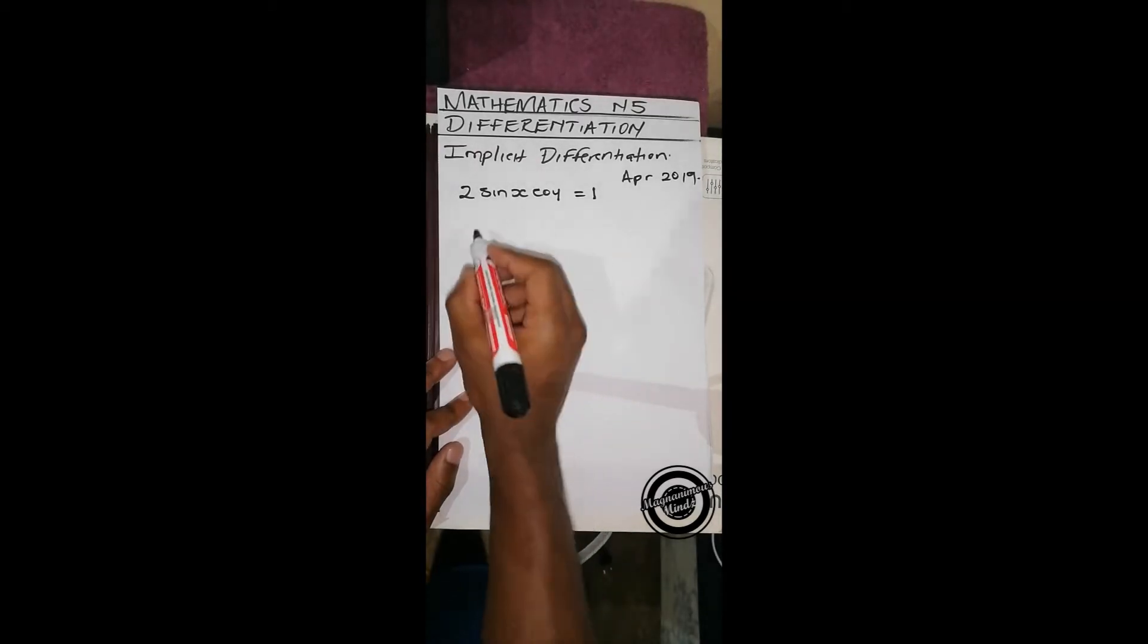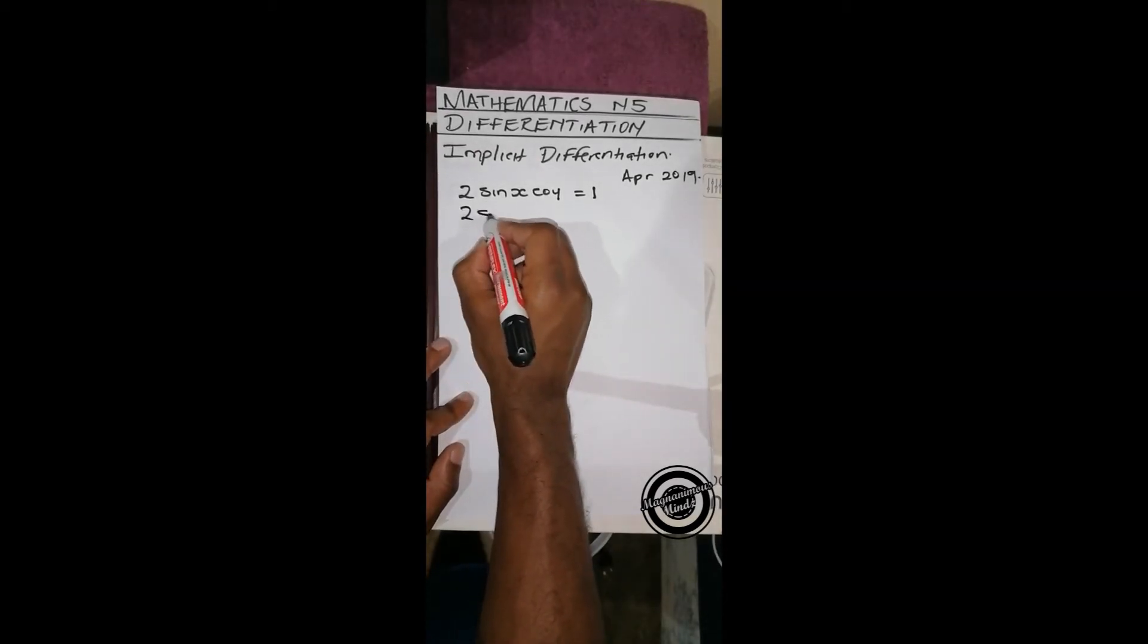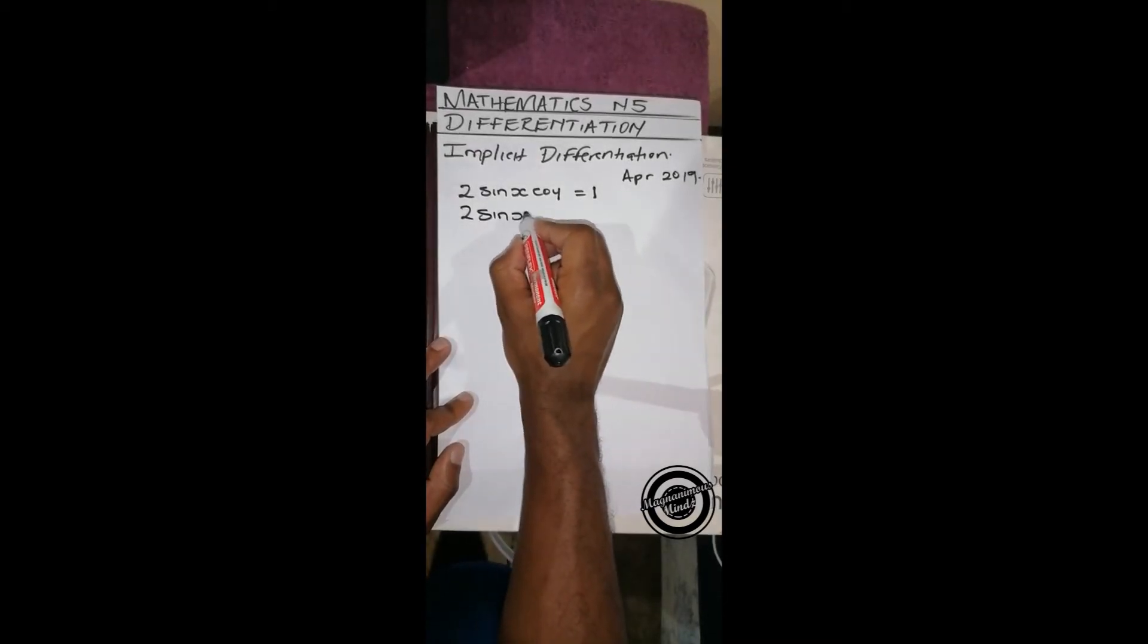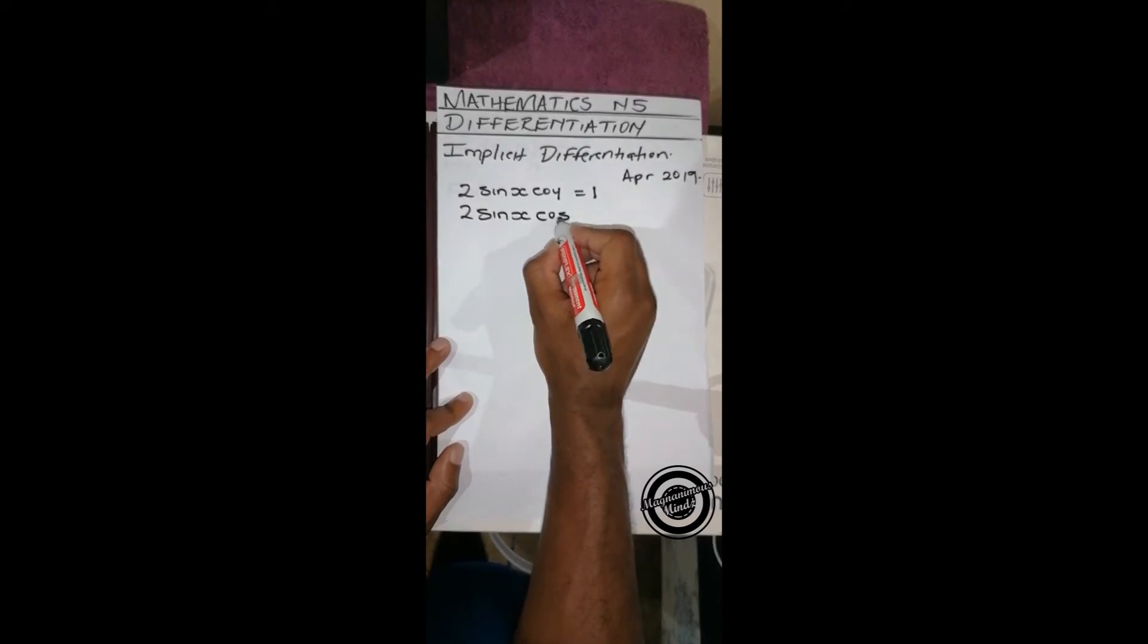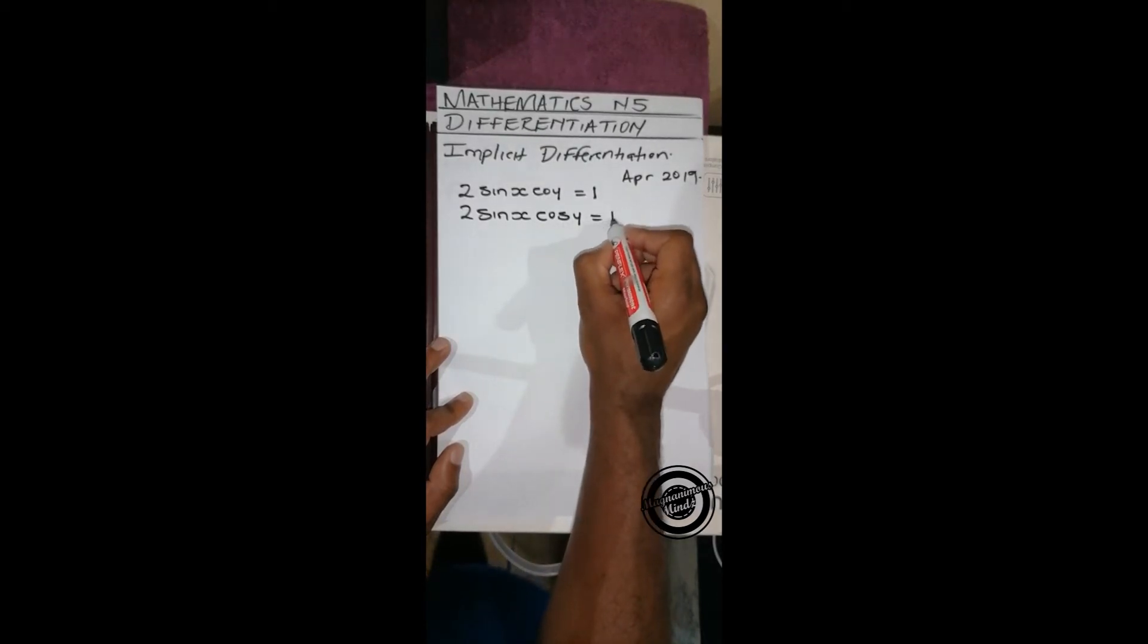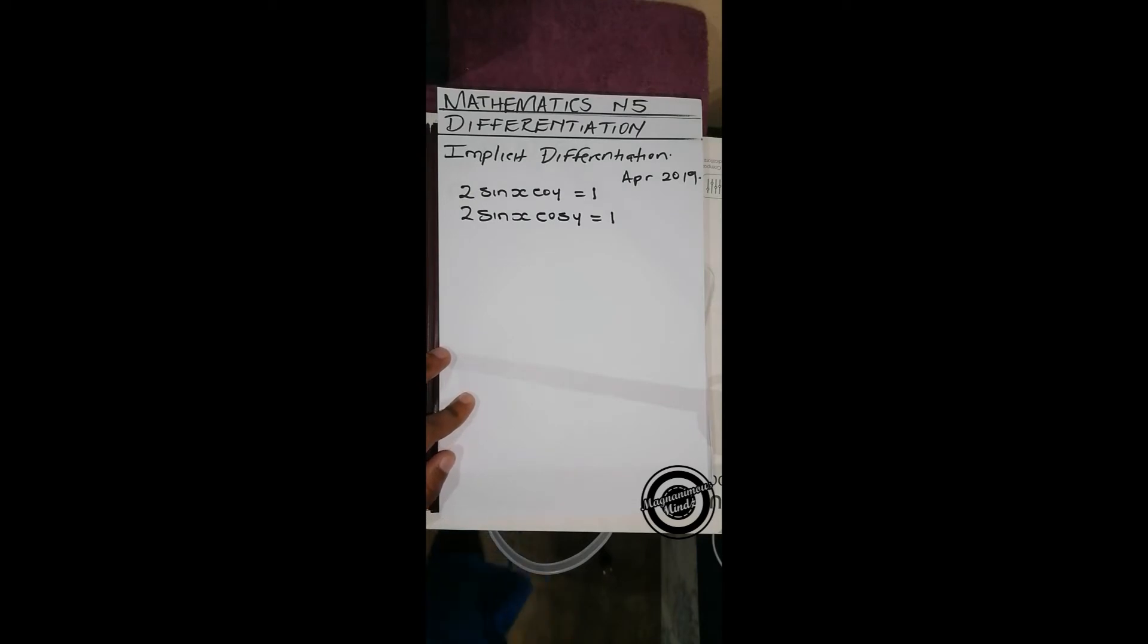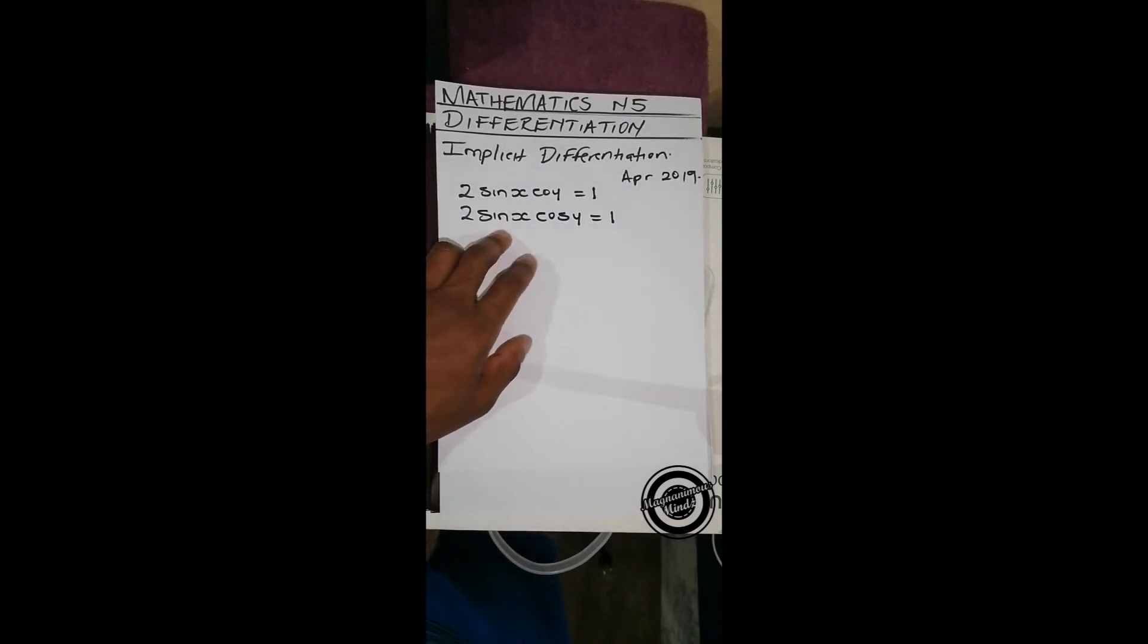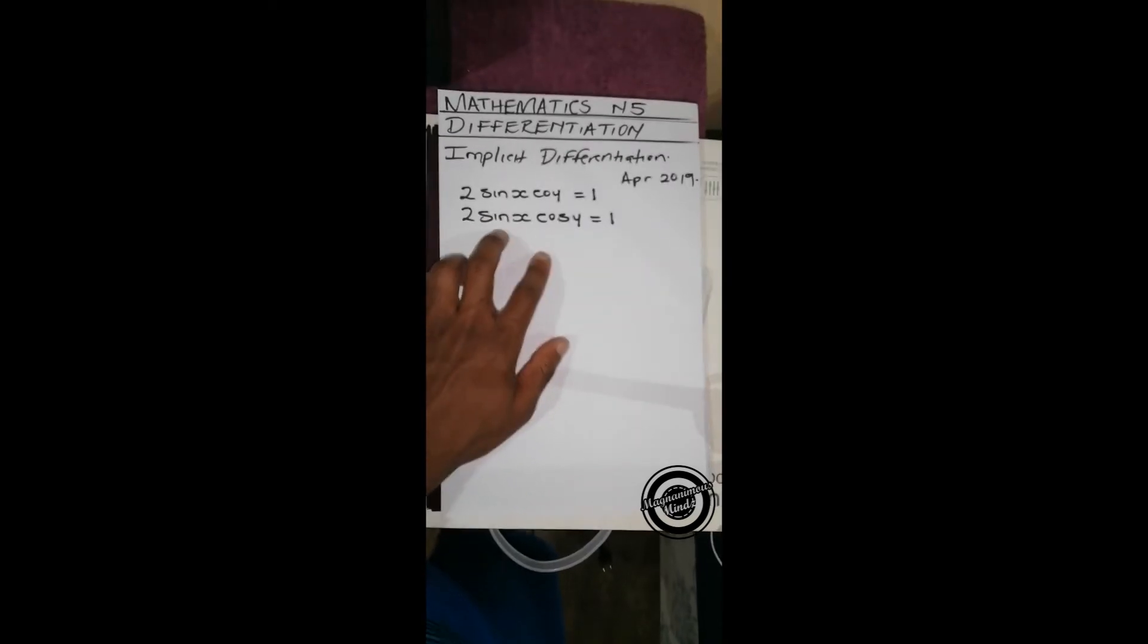I didn't copy the question correctly - it's 2 sin x cos y equals 1. For us to do this, we have to differentiate sin x and also cos y, but since these two are